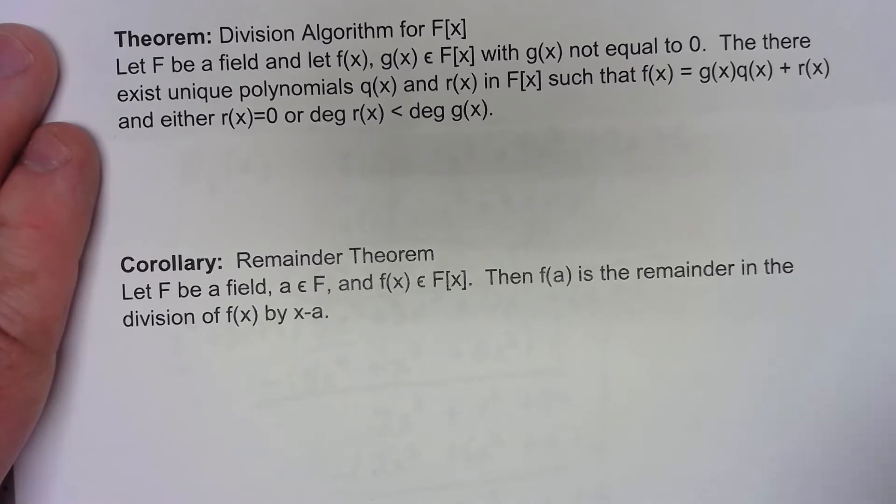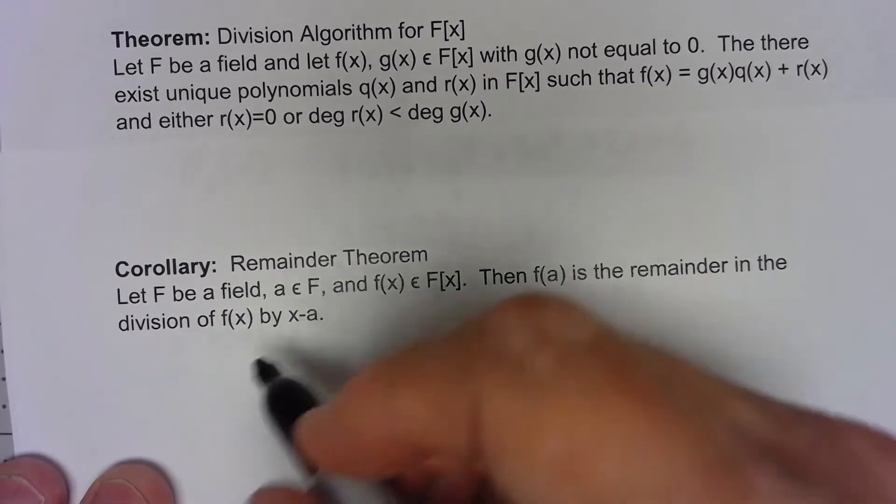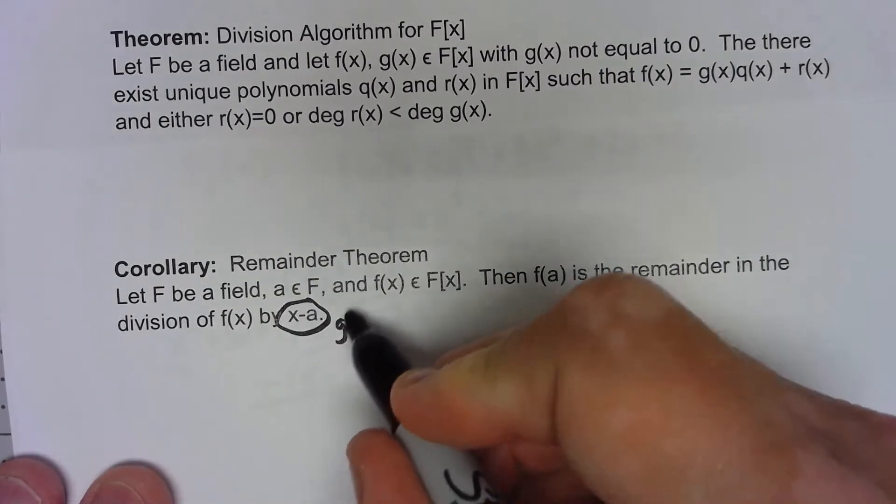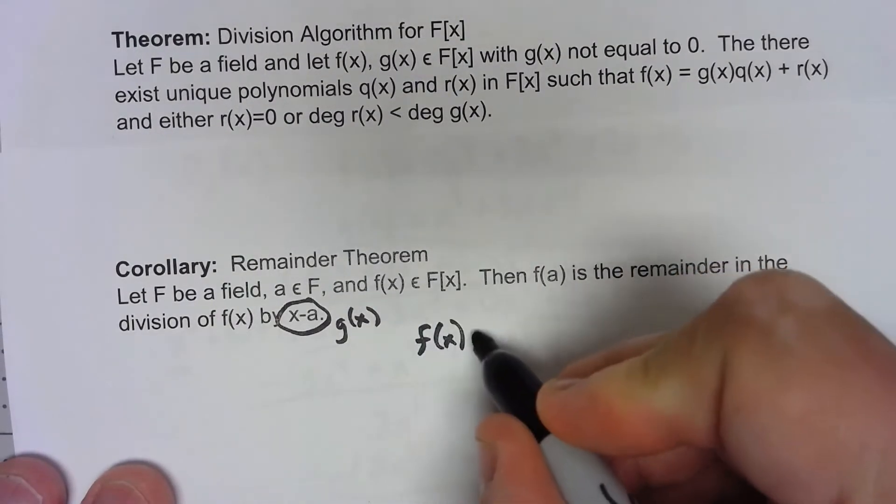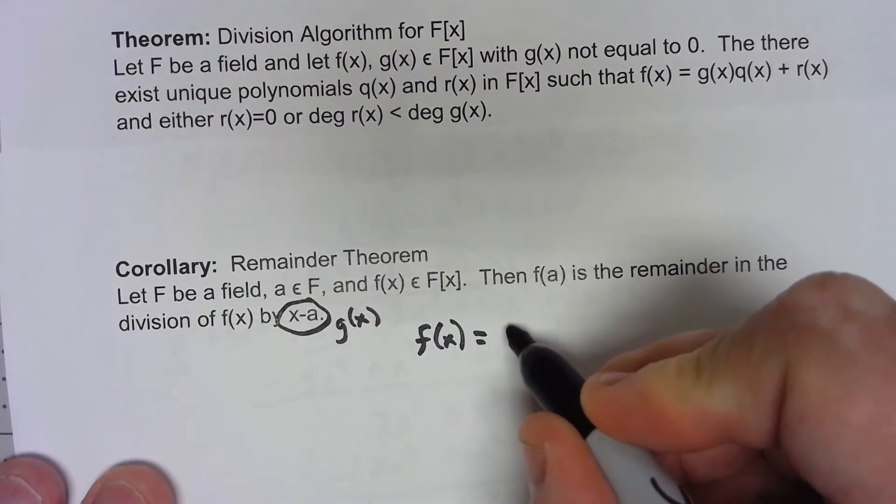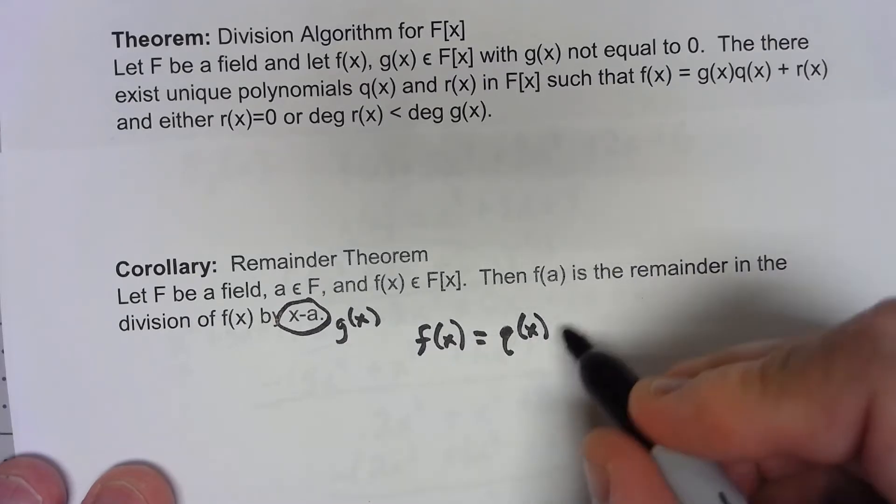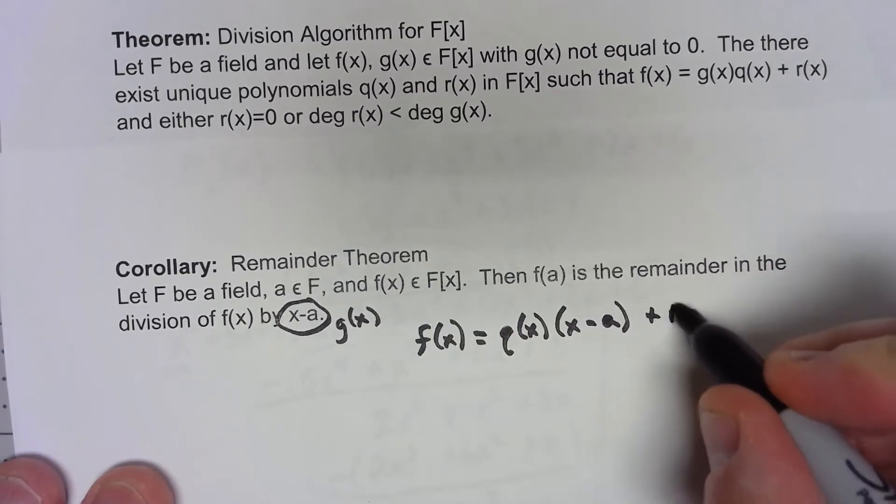If you remember, this is exactly the way it works for real valued polynomials. So why does this work? Well it's really just a direct consequence of the division algorithm. If I say that x minus A is my g(x) in the division algorithm, then f(x) has to equal q(x) times g(x) plus r(x).